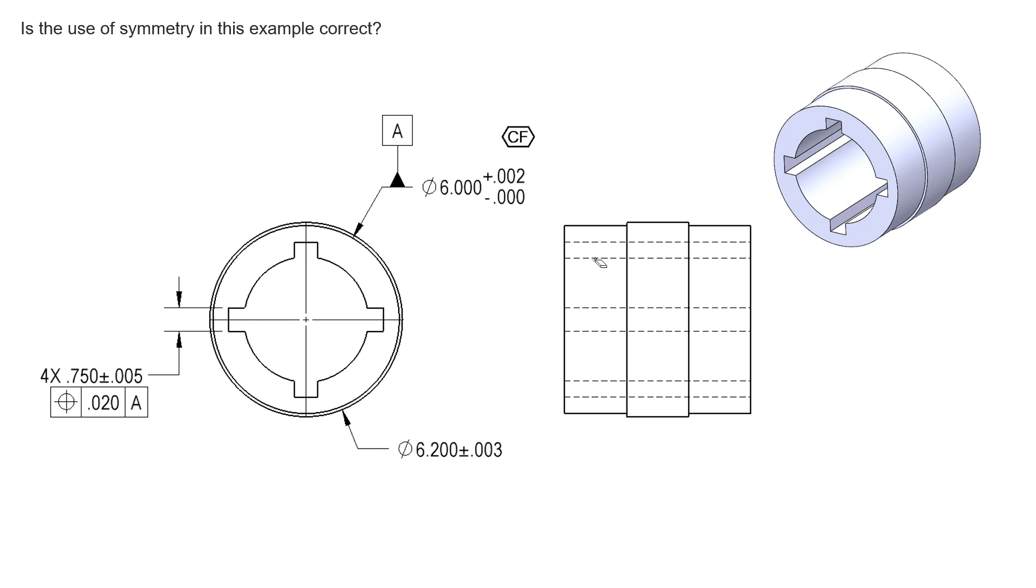We've still identified the outside diameter as datum feature A, and then we go ahead and control the mid-planes of these four features with position back to datum axis A. And datum axis A is going to be down the center of the part based on these outside diameters, and we know that the axis can control translation vertically and horizontally, as well as rotation this way and rotation in and out of the page. So an axis as a primary datum can control four degrees of freedom, two translations and two rotations.